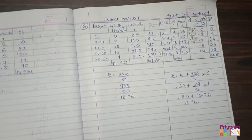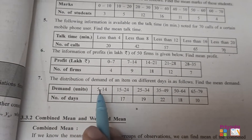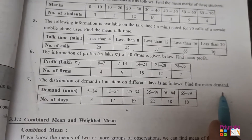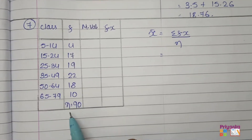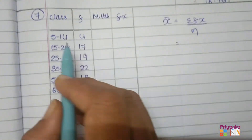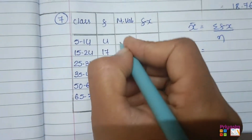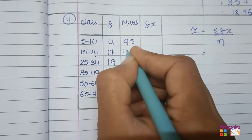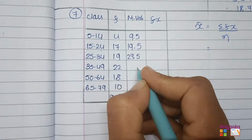Moving to the last question of exercise 3.1, question number 7. The distribution of demand of an item on different days is as follows. Find the mean demand. Here the class intervals and the number of days are given. Let's take the information from the book. First we will find out the mid value: 5+14 ÷ 2 = 9.5; 15+24 ÷ 2 = 19.5; continue the remaining in your calculator.